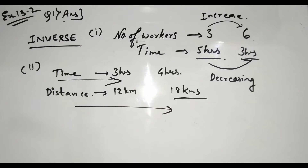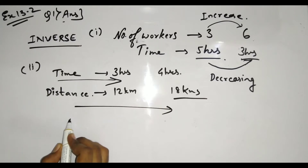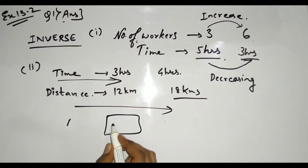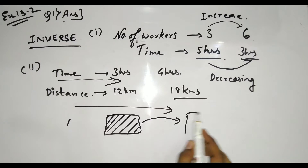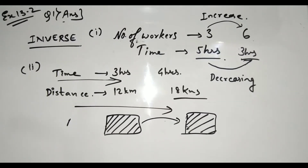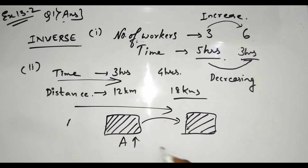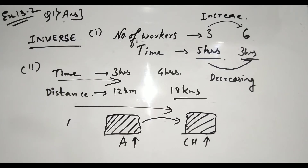Moving on to the third one: area of cultivated land and the crop harvested. It will be direct proportion, because if I increase the area of the land, the crops harvested will also increase. So the third one is direct proportion.